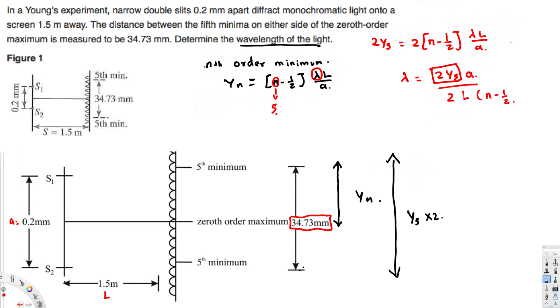34.73 millimeters, that is equal to 2 times y5. Okay, so let's go ahead and plug in those values. This is going to be 34.73 times 10 to the power of minus 3.